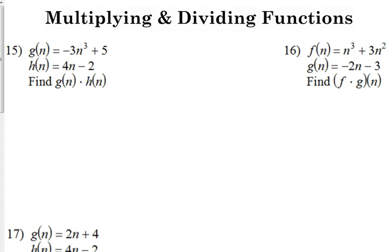Okay, number 15. We've got g of n is negative 3n cubed plus 5, h of n is 4n minus 2. We want to find g of n times h of n.